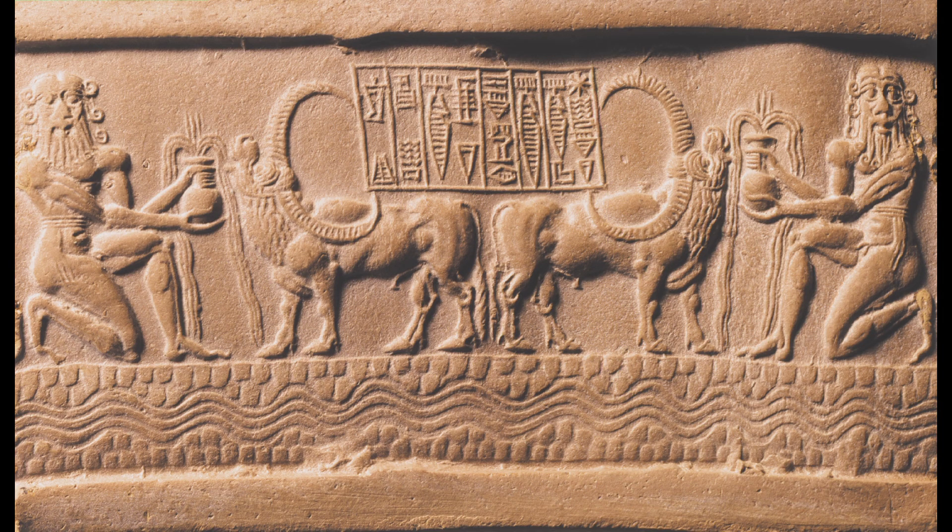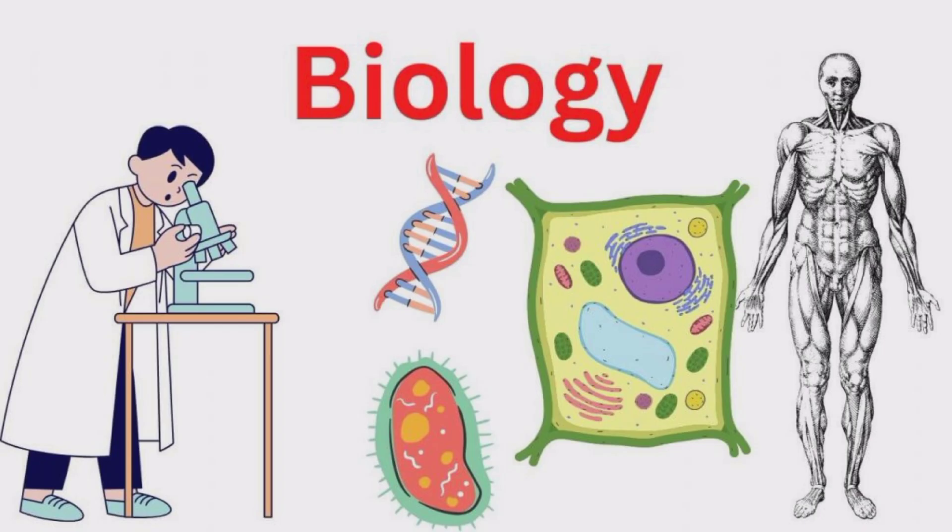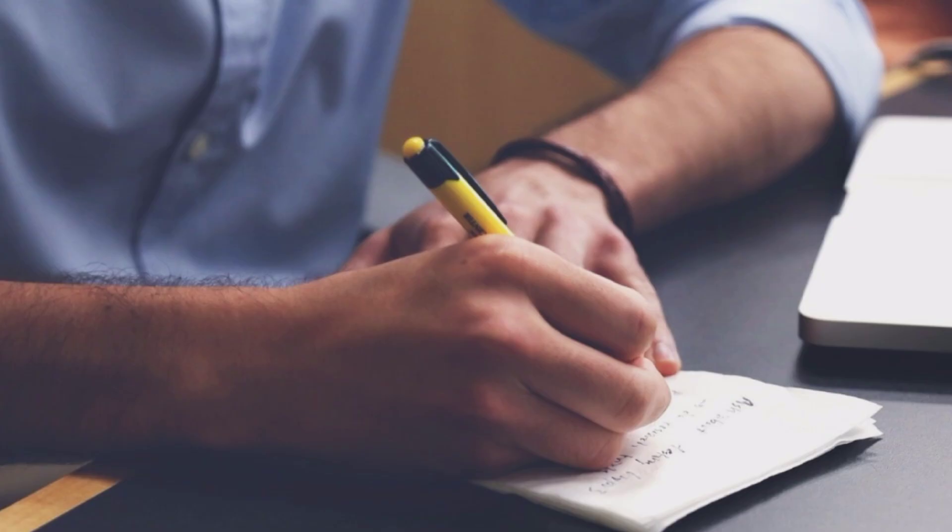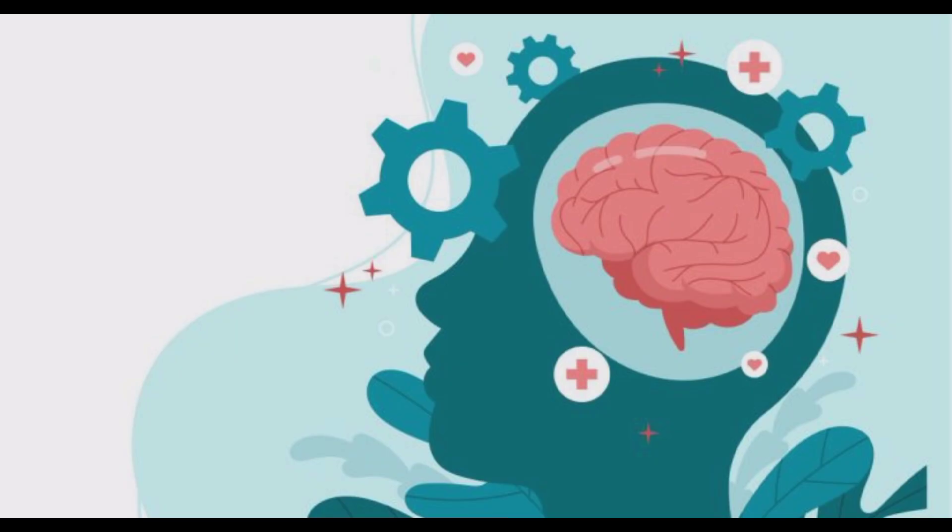Now let us delve into the biological aspect of this phenomenon. Research has identified that hand preference is linked to brain lateralization, the division of tasks between the brain's two hemispheres.